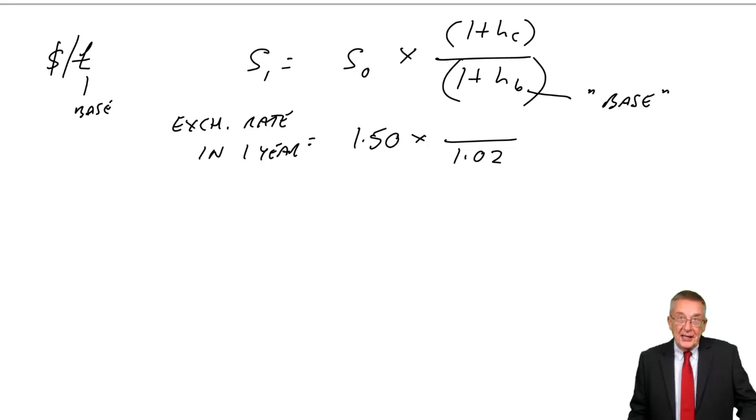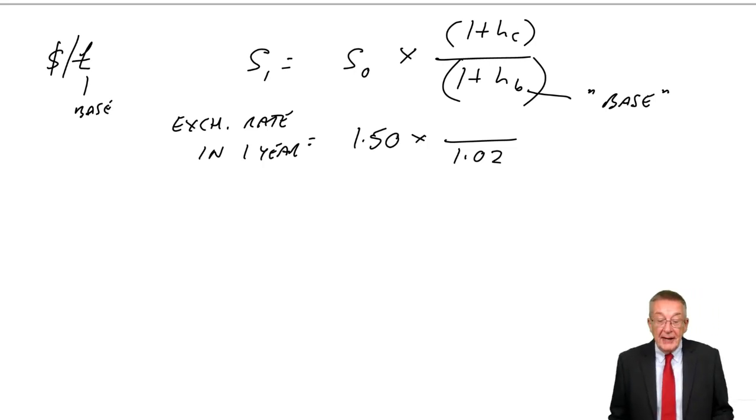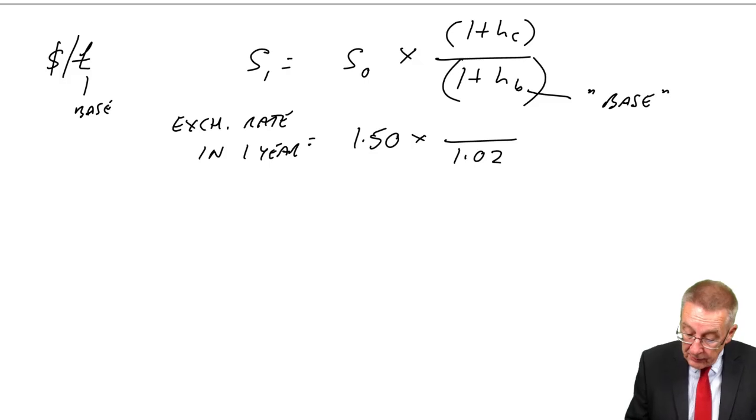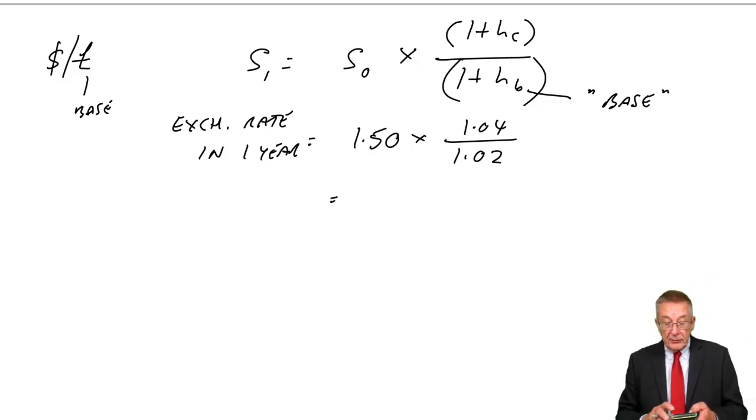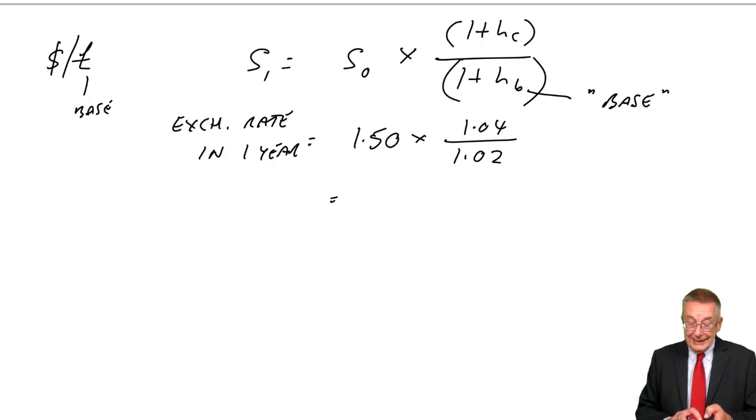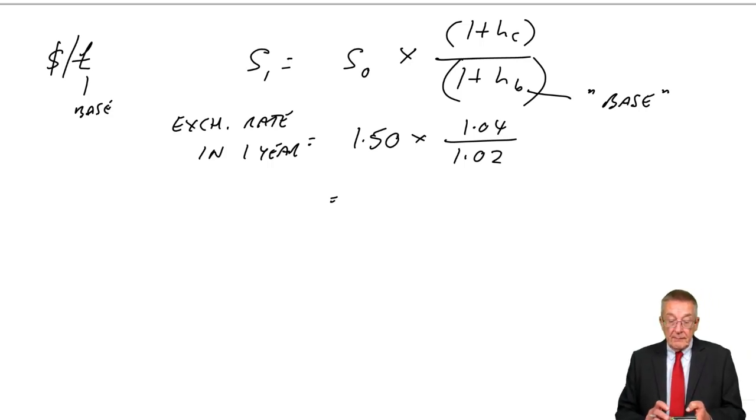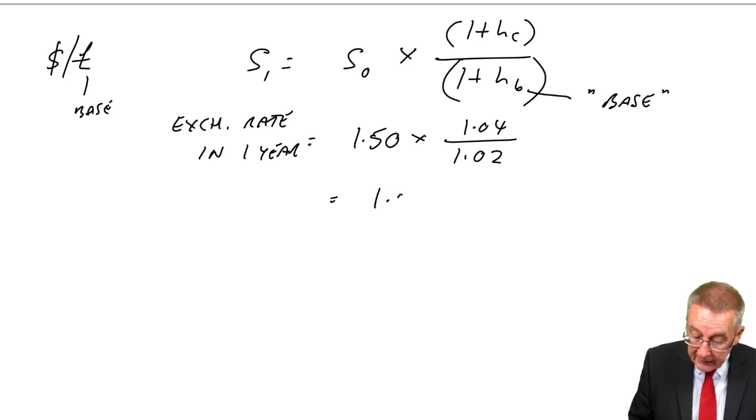HC is the other country. So the other country here is the US, the inflation rate 4%, so 1.04. And of course, the exchange rate.